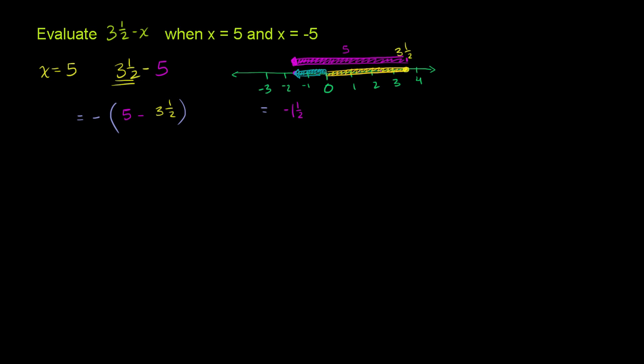Let's do the second part. X is equal to negative 5. Then this expression up here becomes 3½ minus, and instead of X, we have a negative 5. Minus negative 5.